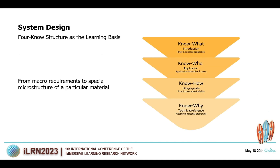This figure demonstrates the 4-0 structure. Know What offers users a general introduction to the material and sensory perception information. Know Who links with the end-user of materials and is about application. Know How provides guidance on usage, including advantages, disadvantages, and the sustainability of the materials. Know Why is related to information containing specific data on the properties of materials.